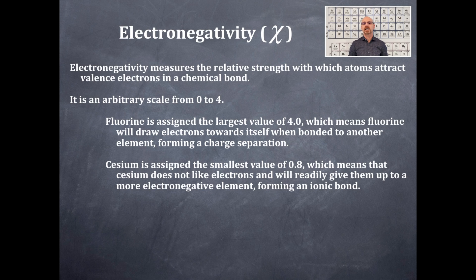Cesium is assigned the smallest value and depending on what table you look at, it's either 0.7 or 0.8, which means that cesium does not like electrons. In fact, it will readily give up those electrons to a more electronegative element and more than likely form an ionic bond. Fluorine is a non-metal, it loves electrons. Cesium is a metal, it hates electrons.